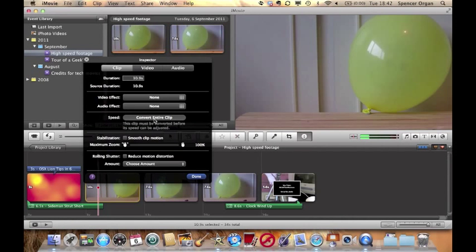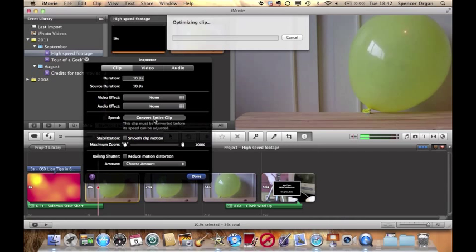Drag your clips into the Project Viewer and then click on them. You'll need to convert the entire clip to adjust the speed. This might take 10 to 20 minutes to optimize the clips.